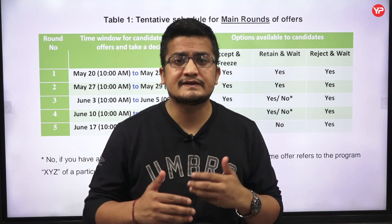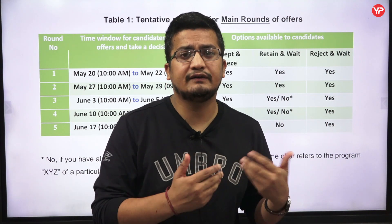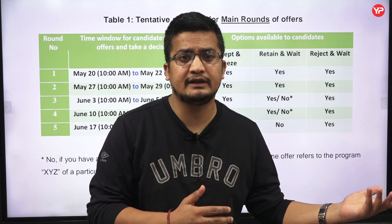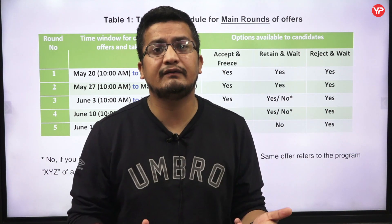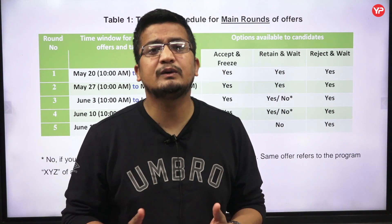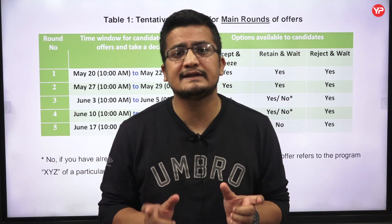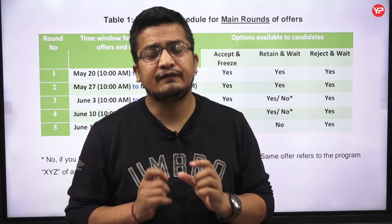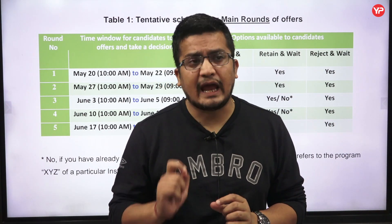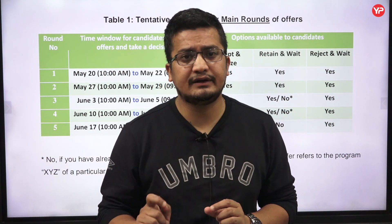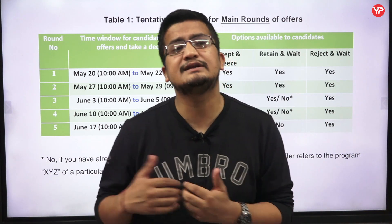If your offers keep changing — in the first round there were different options and you did Retain and Wait, in the second round you did some different Retain and Wait — then definitely you can Retain and Wait in the third round also. The simple point is that if you have done Retain and Wait on any particular offer two times, now you can't do Retain and Wait again; you need to either Accept or Reject.